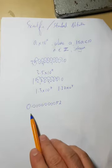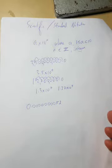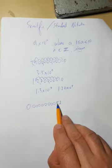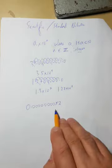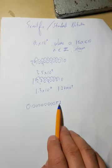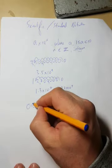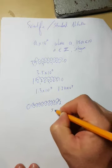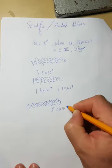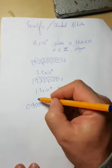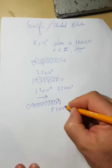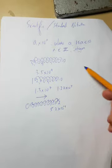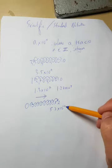Now for a really small number — something like 0.000000052. We move the decimal until it's after the first non-zero number. That's one, two, three, four, five, six, seven, eight, nine places, giving 5.2. But this time we're moving right, so we use a negative power: 5.2 × 10 to the minus 9. If the decimal moves left, the power is positive; if it moves right, the power is negative.